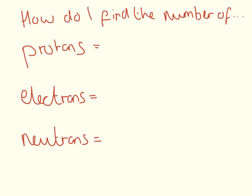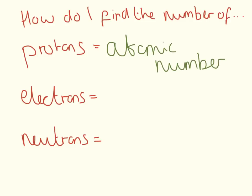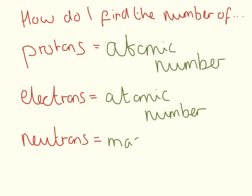You need to be able to use a periodic table to find the number of protons, neutrons, and electrons. The number of protons is easy — it is just the atomic number, the smaller of the two in the box. For an atom, the number of electrons is also equal to the atomic number. The number of neutrons is slightly trickier: it is the mass number minus the atomic number.